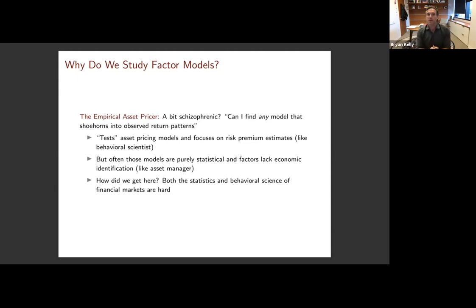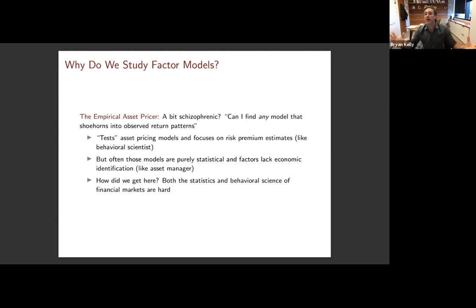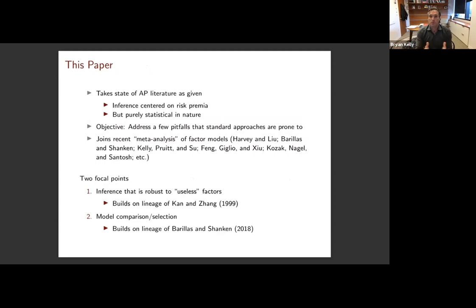There's a bit of a schizophrenia that's taken over the empirical asset pricing perspective on factor models, boiling down to this question: can I find any model that I can shoehorn into the empirical patterns I observe among asset returns? How is the asset pricer like a behavioral scientist? They like to do asset pricing tests and focus on the risk premia estimated from cross-sectional regressions. But at the same time, we've gone down the path of focusing on statistical factor models, which don't have clear economic identification of what those factors are. We're thinking about risk premium estimates but have sort of lost the identity of the factors.